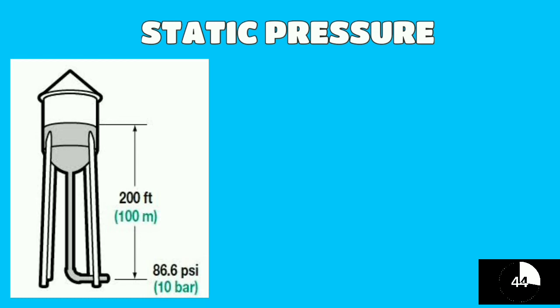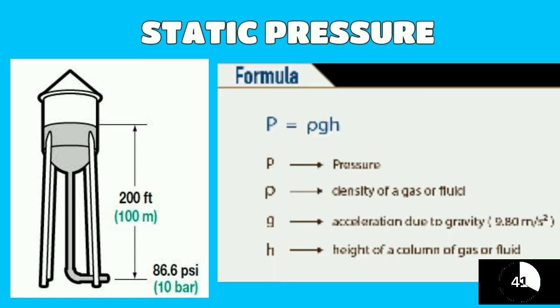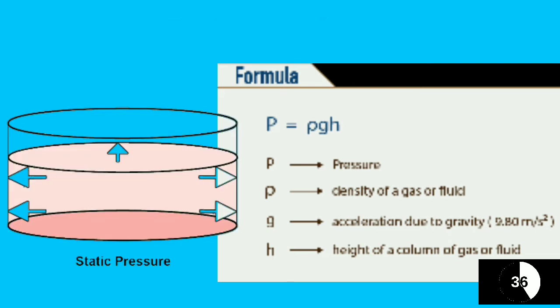The static pressure at a point in a fluid system is directly proportional to the density of the fluid and to the height of the fluid column. Static pressure is exerted equally in all directions.